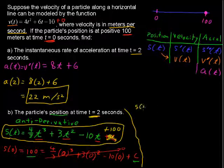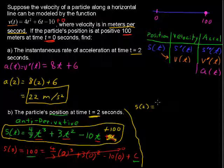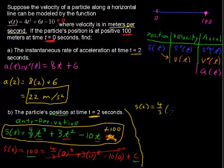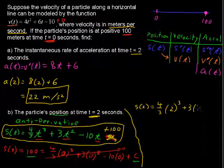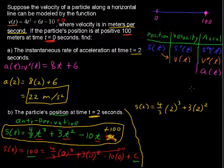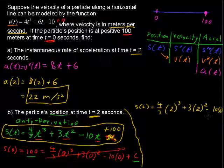So, s(2) = 4/3 times 2³ plus 3 times 2² minus 10 times 2. I ran out of room. I've got plus 100. That's this part.